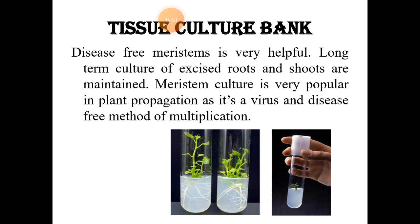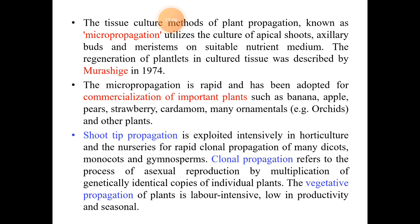In the picture, you can see in vitro plantlet production in test tubes on a nutrient media. The tissue culture method of plant propagation is known as micropropagation. It uses apical shoots and bud meristems on a suitable nutrient medium for the regeneration of commercial plantlets. This method of tissue culture was described by Murashige in 1974.